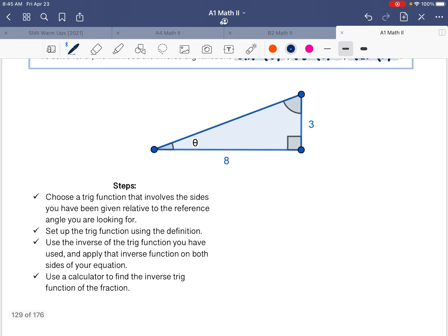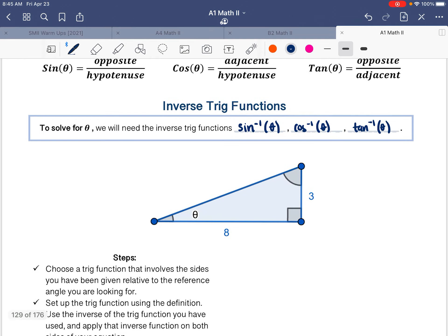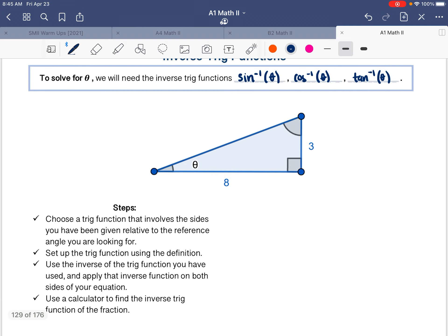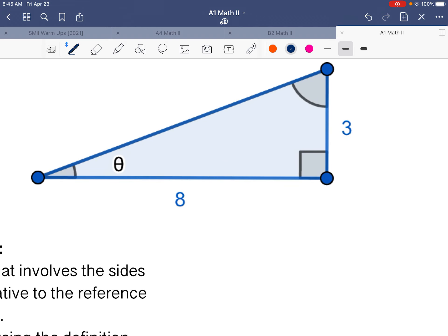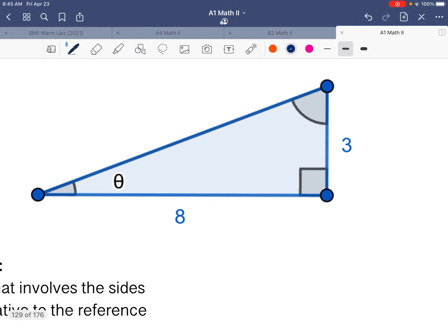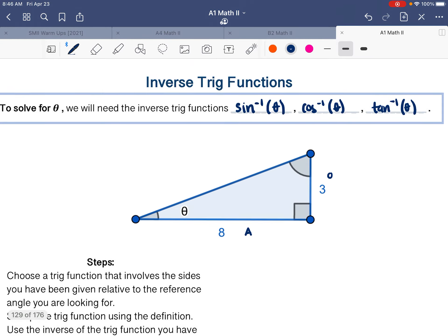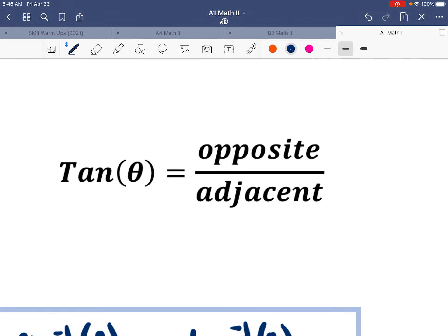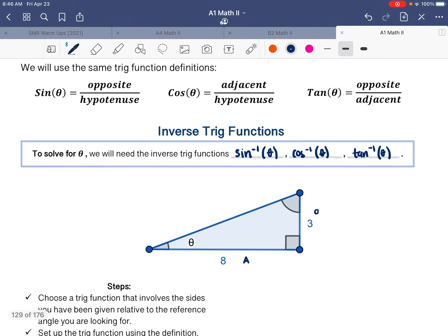So what we can use them for is actually finding missing angles instead of missing sides. So the first step of doing problems like these are really close to what we've already done. We're looking at a reference angle and we're deciding what trig function to use depending on what sides we're dealing with. So in this triangle, we have a reference angle on the bottom left, and then across from that is the opposite side, and this is the adjacent side. Meaning that then the only trig function that will be helpful to us is tangent, which deals with opposite and adjacent.